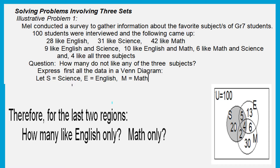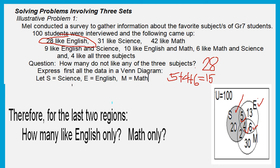We can now consider the last two regions — English only and Math only. For English, we already have 5, 4, and 6, which has a total of 15. But according to the given, those who like English are 28. So, 28 minus 15 gives us 13 who like English only. For Math, we already have 4, 2, and 6, which totals 12. Those who like Mathematics are 42. So, 42 minus 12 is equal to 30, meaning 30 like Math only.